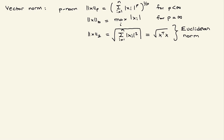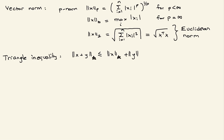Now I would like to talk about the triangle inequality. Basically, for any vector norm, ||x + y|| is less than or equal to ||x|| + ||y||. This holds for any vector norm, so the star can be any norm from 1 to infinity.